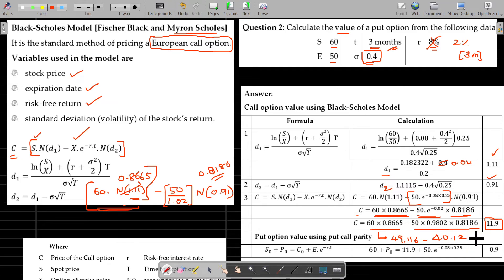11.9 being the call option value. To find out the put option value, we have to depend on put-call parity theory. Put-call parity theory formula: spot price of the share plus put option value should be equivalent to call option value plus present value of the exercise price. If you substitute, the put option value is 0.9. The dividend value is the adjustment value. Make a note of it.